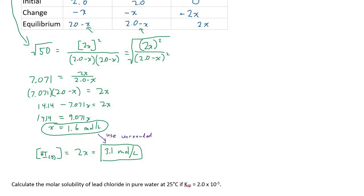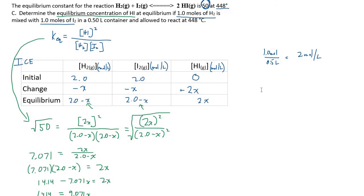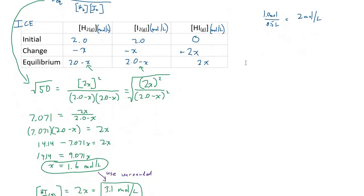To review our steps: make sure you start with a balanced chemical equation, make the ICE table, fill those values into the equilibrium constant equation, solve for x, and plug x back in wherever needed.